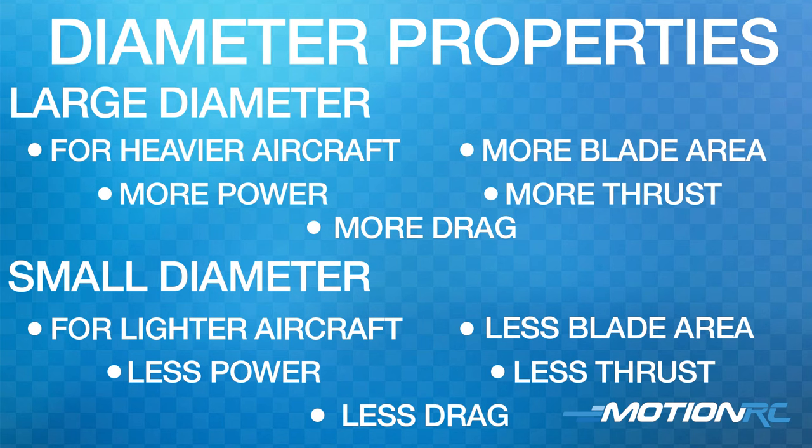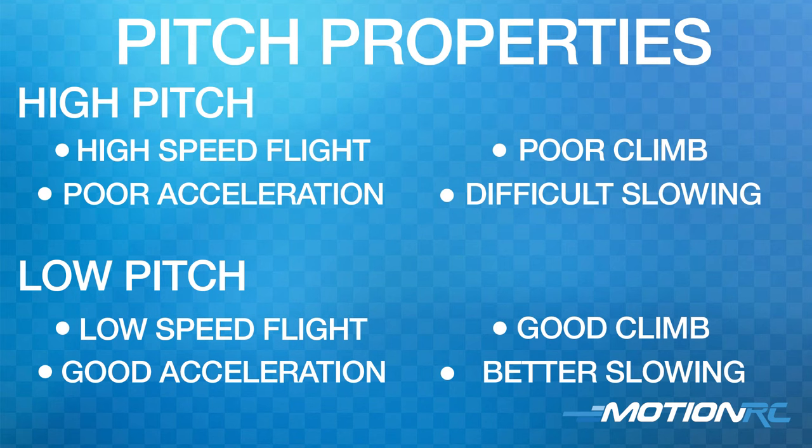Whereas a smaller diameter but a higher pitch prop is going to be better for top-end speed, but will be harder to slow down and land. That's why trainer aircraft tend to have bigger diameter, lower pitch props because they don't need to be fast, whereas a racer aircraft could have a really small prop because you're just looking to get as much speed. There are so many factors at play here.